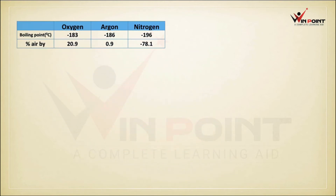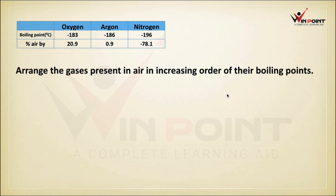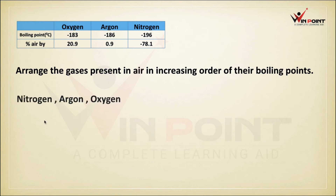Now we answer some questions. To arrange gases present in air in increasing order of boiling point, the lowest boiling point comes first. Nitrogen has the lowest boiling point (−196°C), so nitrogen is first, then argon, then oxygen.